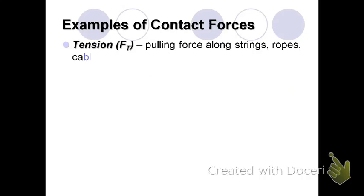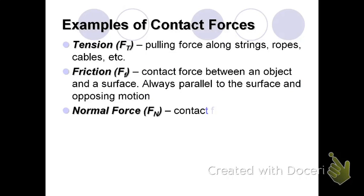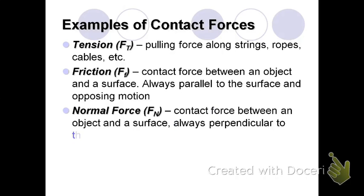Examples of contact forces. There's a tension force, FT. Notice the symbol we use for force is a capital F, and we use a subscript to describe which specific one it is. So FT, tension force, is a pulling force along strings, ropes, cables, etc. Friction force is a contact force between an object and a surface that is always parallel to the surface and opposing motion.